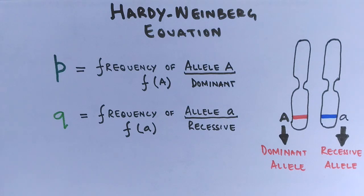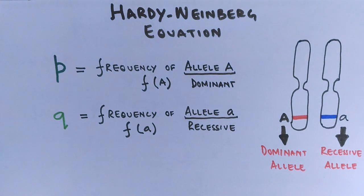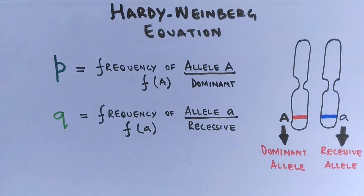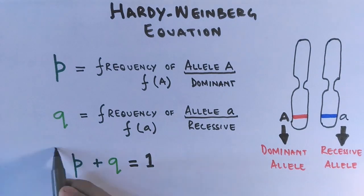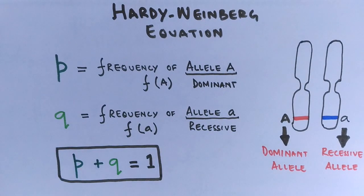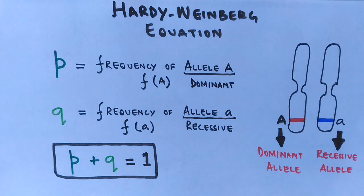According to the Hardy-Weinberg equation, the sum of both the frequency of dominant allele and the frequency of recessive allele should be one, or 100 percent. The equation can be written as P + Q = 1. This is the first equation for Hardy-Weinberg principle at allelic level. This only happens when evolutionary influences are absent.